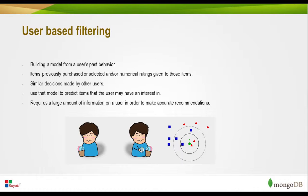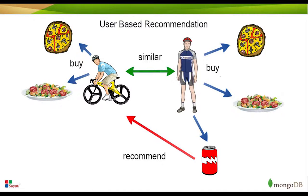In the user-based filtering approach, the system creates a model from a user's past behavior. To recommend an item, it builds a model considering three things: items previously purchased, items not purchased but added to cart, and numerical ratings given to those products. The system also uses similar decisions made by other users. One drawback is that it requires a large amount of information to get started. For example, if one user purchased a pizza and salad and later bought Coca-Cola, the system will find other users who bought pizza and salad and then recommend Coca-Cola to them.